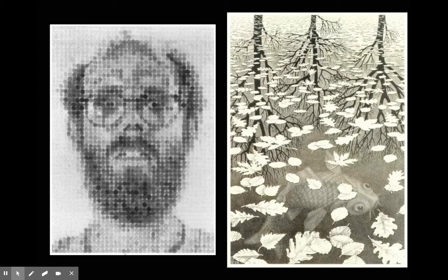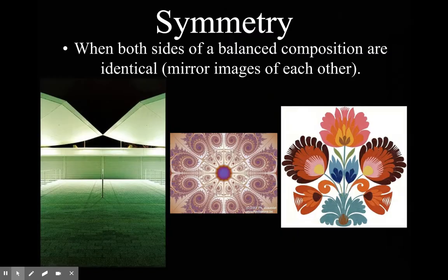There are more examples of formal balance. Think about a vertical line that breaks the image in half and you basically have the same thing on either side. So it's easy to see, easy to recognize, and easy to create as well.